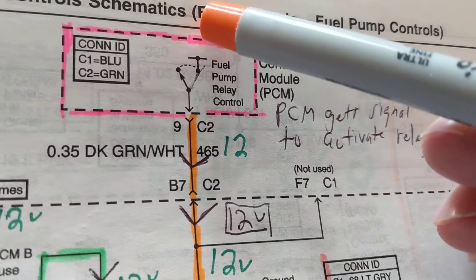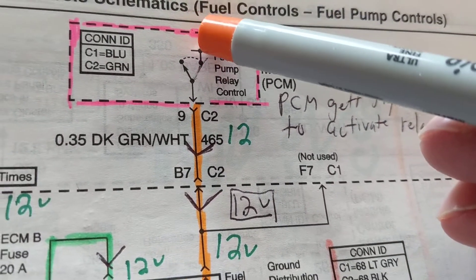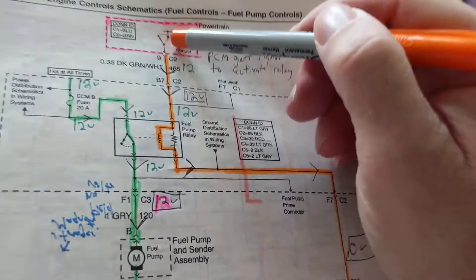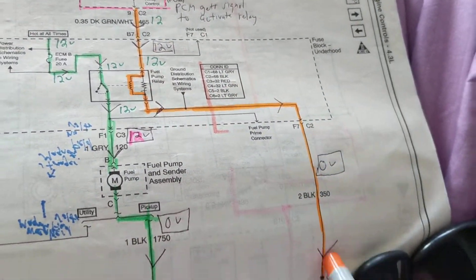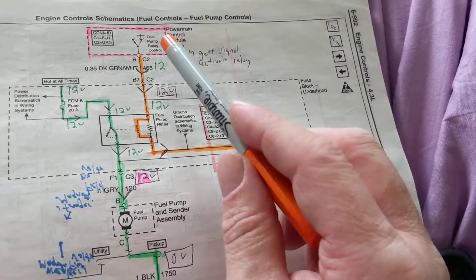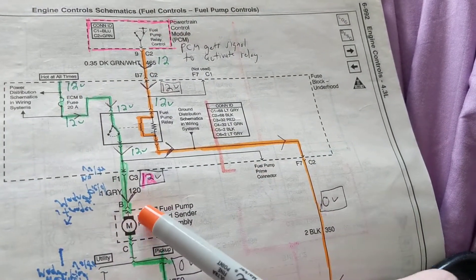Anyway, this will be as 12 volts. When this goes to 12 volts, what happens? Now this relay, the coil, is activated through ground, and then this is activated to turn on the fuel pump.